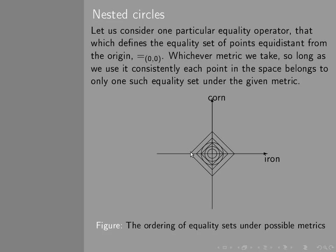I've shown a set of nested diamonds. And each position on this diamond, if you had a Manhattan metric, would have the same value. And each position on this diamond would have a different value. The same would be true if I had Euclidean metrics, where the circles would be circles of the sort that we're used to. And whichever metric we take, so long as it's used consistently, each point in the space belongs to only one such equality set under the given metric.